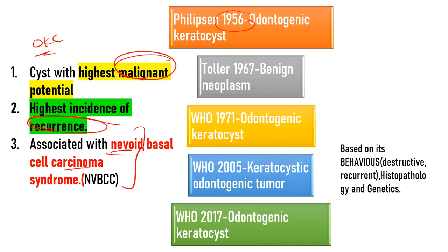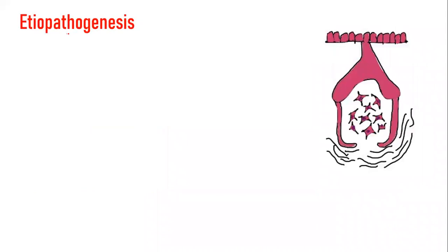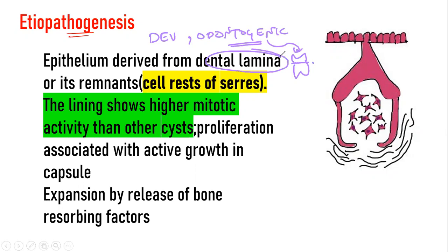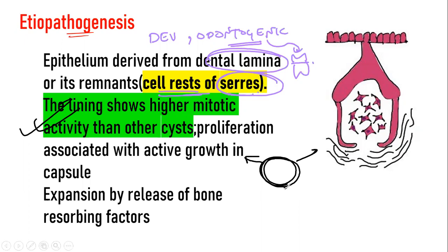This syndrome we'll talk about at the end of this video. In the pathogenesis, this is a developmental odontogenic cyst, so odontogenic means it arises from cells that give rise to odontogenesis — that form the tooth. It is associated with the dental lamina or the cell rests of the dental lamina, which are called the cell rests of Serres. The lining has a high innate potential for proliferation, and the cyst grows by the release of resorption factors which cause resorption of the surrounding bone.